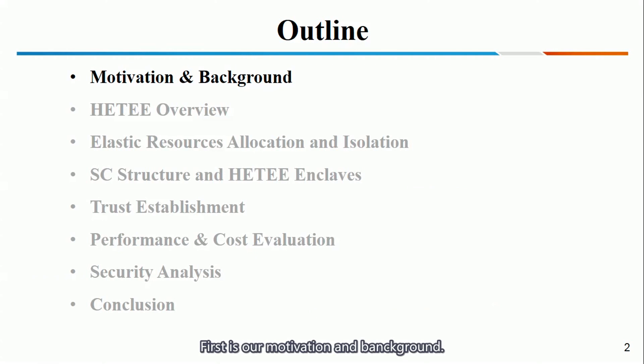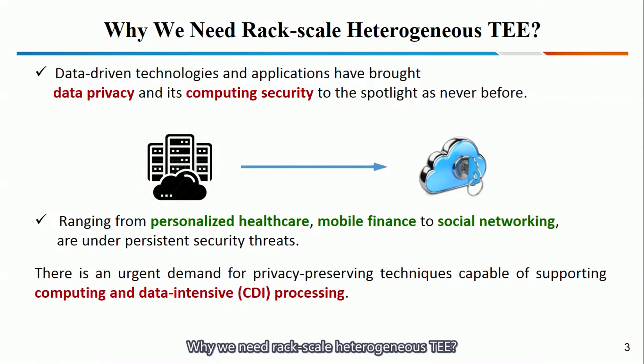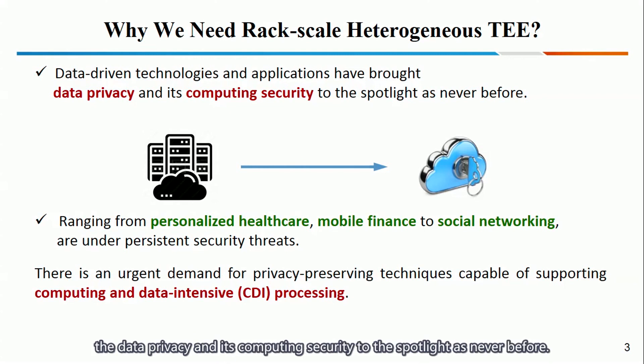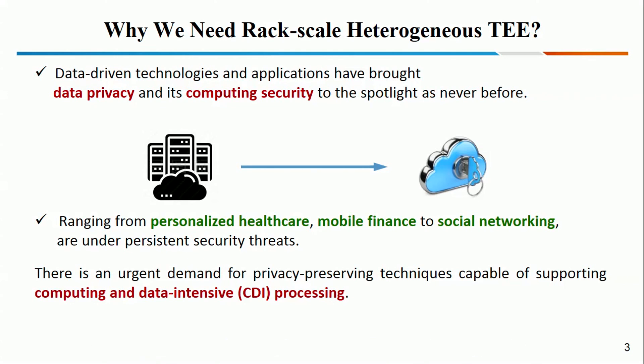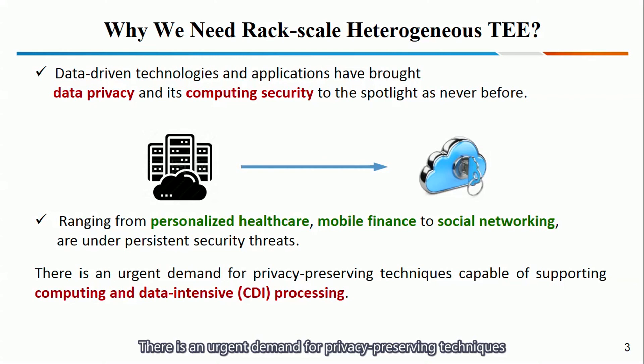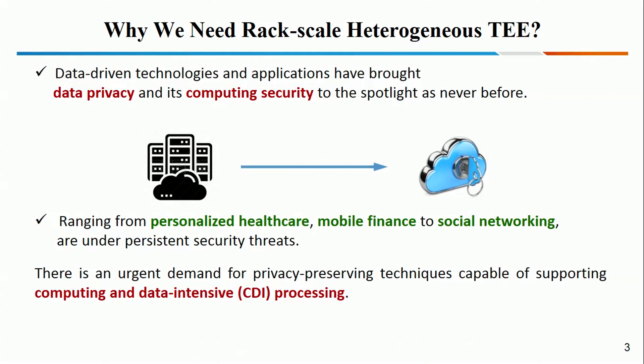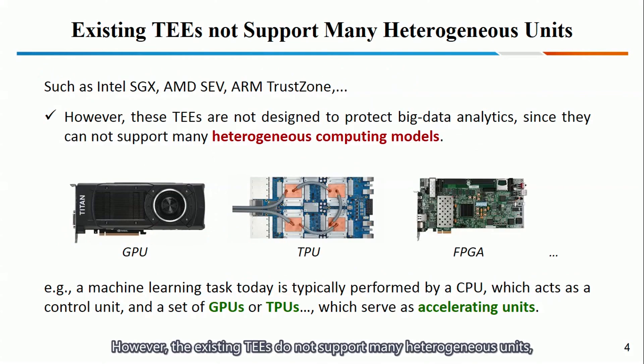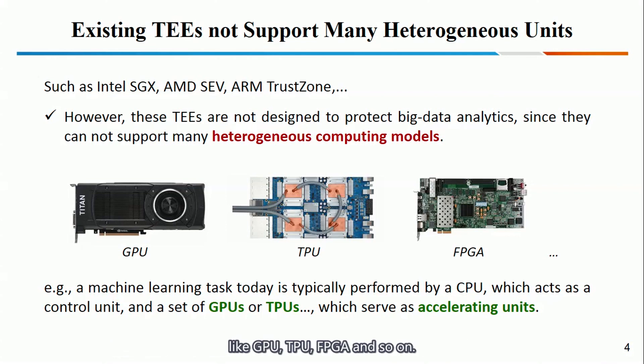First is our motivation and background. Why do we need RackScale HeatGenius-T? Nowadays, data-driven technologies and applications have brought data privacy and computing security to the spotlight as never before. There is an urgent demand for privacy-preserving techniques to support computing and data-intensive processing. However, existing TEEs do not support many HeatGenius units, like GPU, TPU, FPGA, and so on.